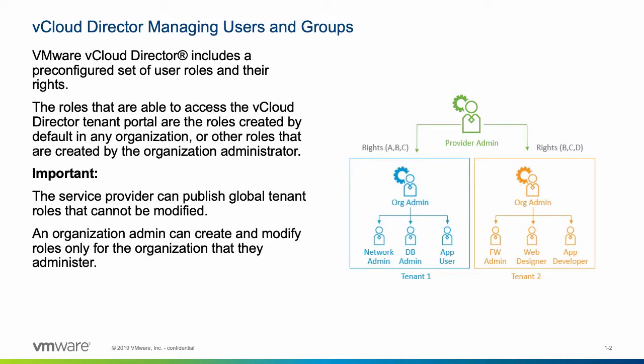A service provider can control which rights are available for an organization. Additionally, a service provider is able to publish global tenant roles that cannot be modified. An organization admin can create and modify roles only for the organization that they administer.